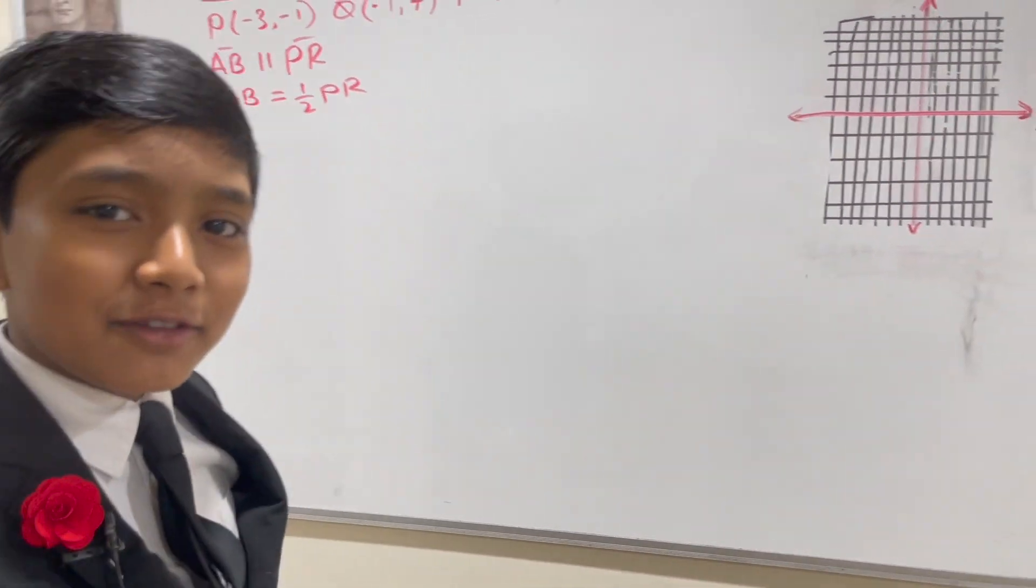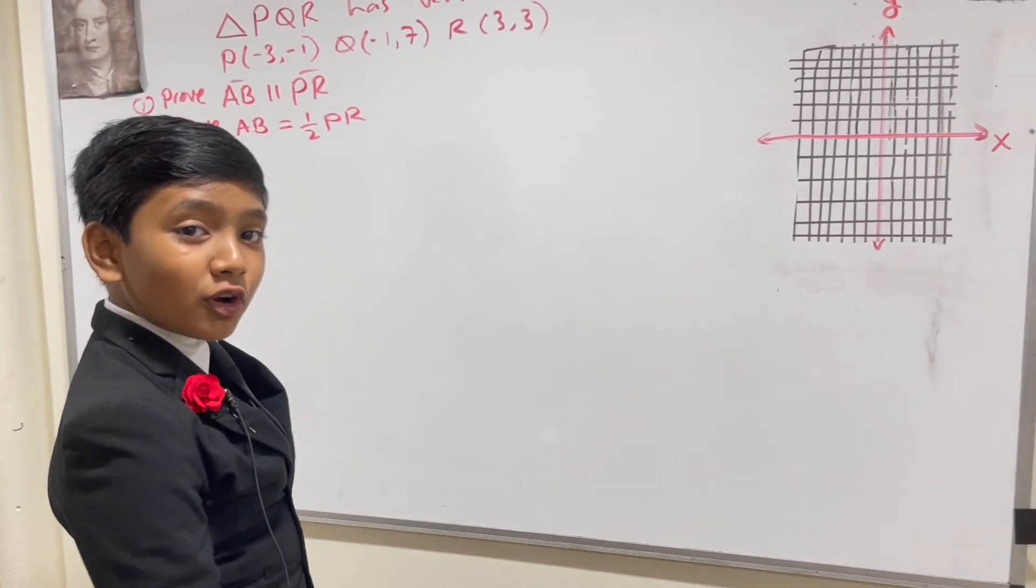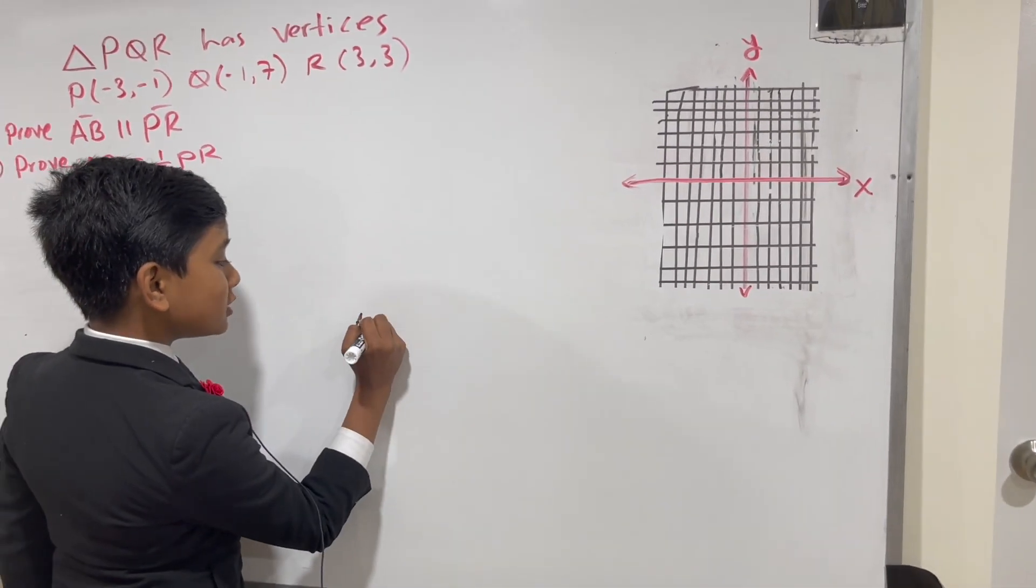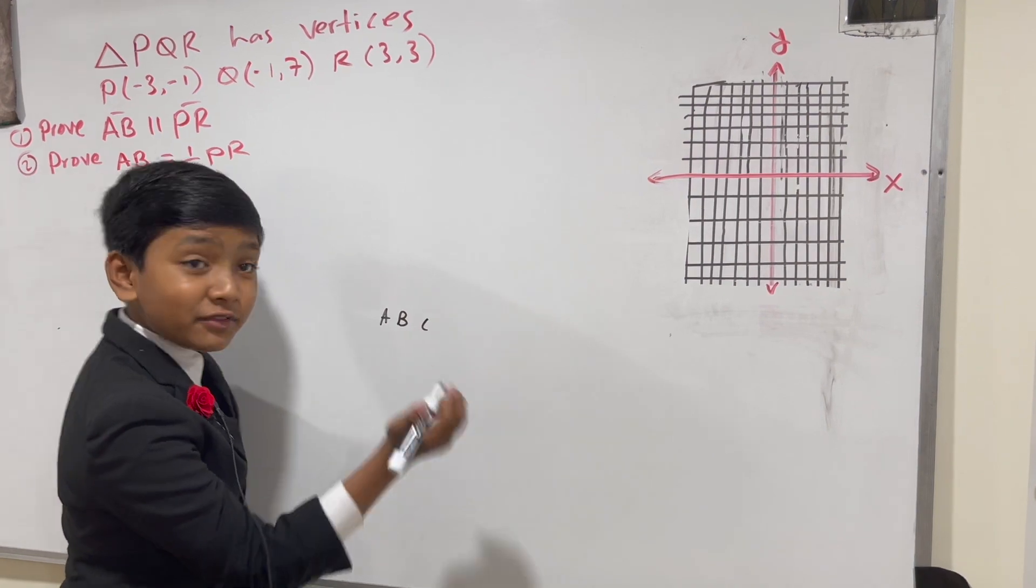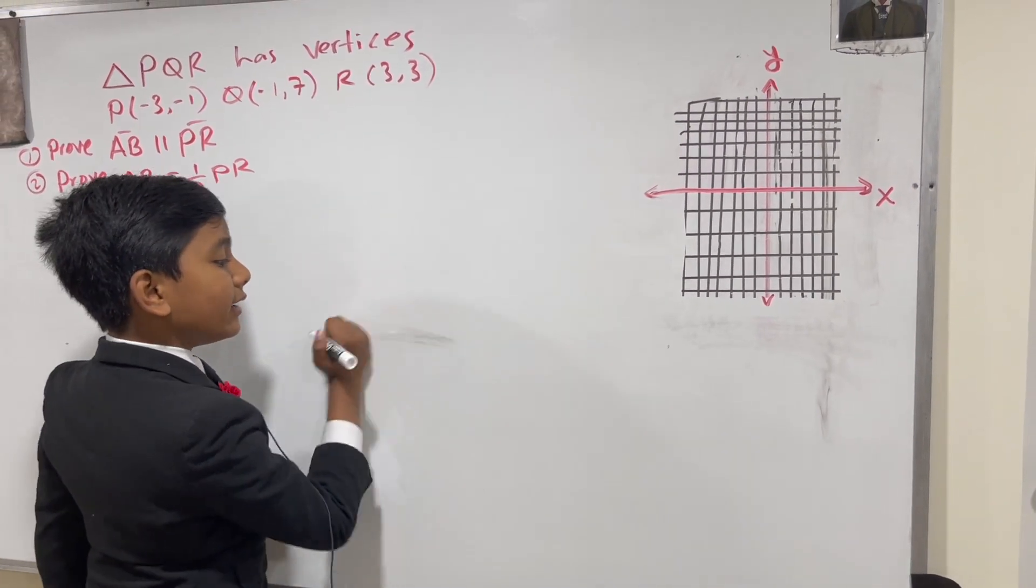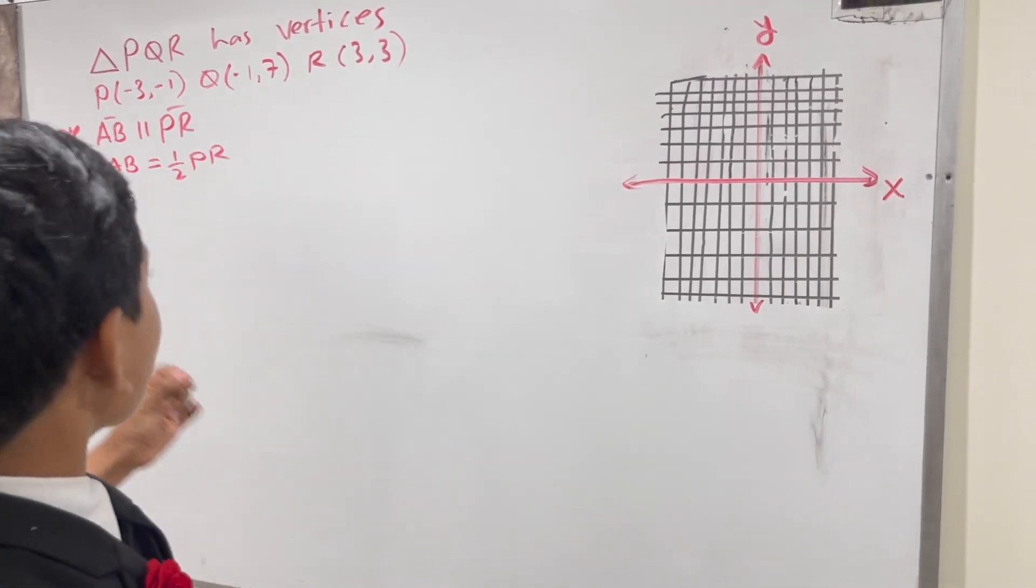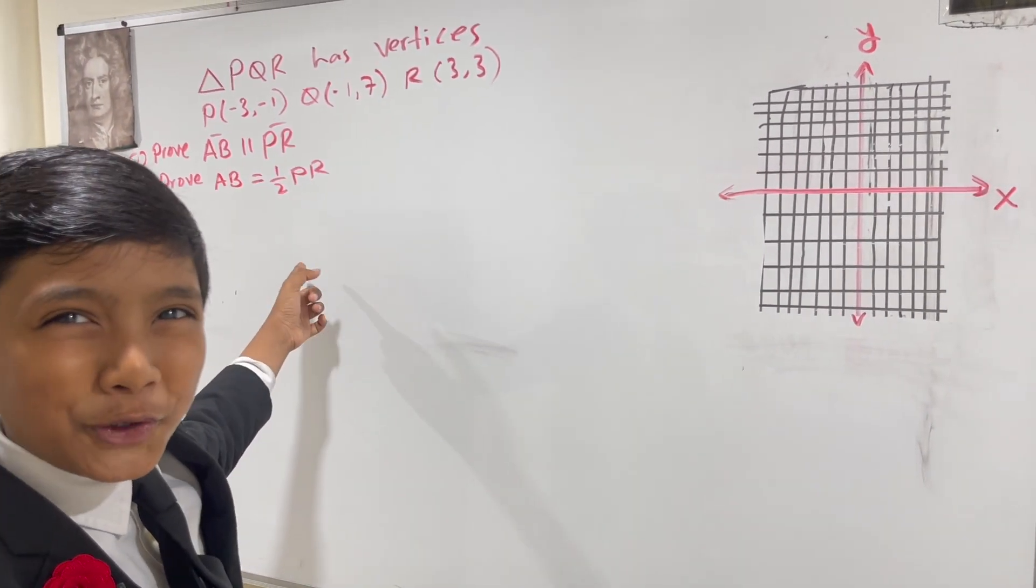Well, calm down. I'm sure you all know what A and B are. Of course, they're the first two letters of the alphabet. So anyway, let's get started. First, let's draw those coordinates.